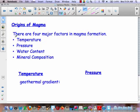So we look at magma itself, there are four main things to keep in mind: there's temperature, pressure, water content, and mineral composition. Those are the four things that should dictate what type of igneous rock we're going to get.